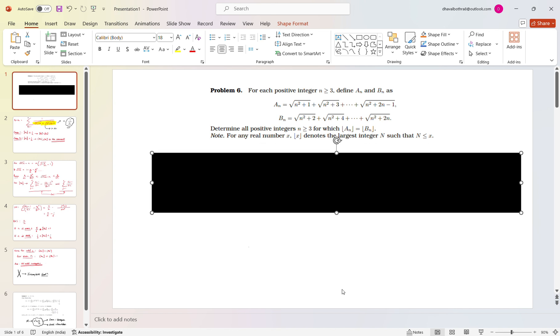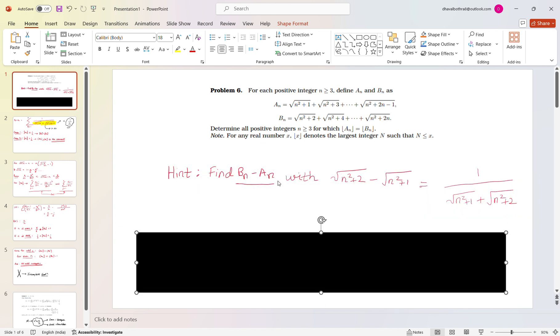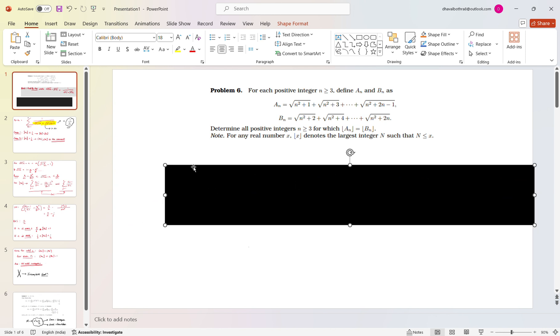So one of the crucial hints which I believe is subtracting them, which I have written also, like find b_n minus a_n by subtracting and then rationalizing. After this few people might want to try the problem.